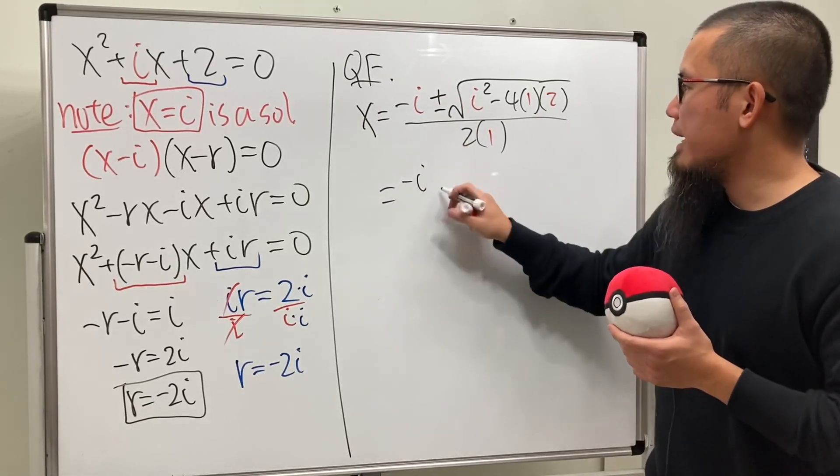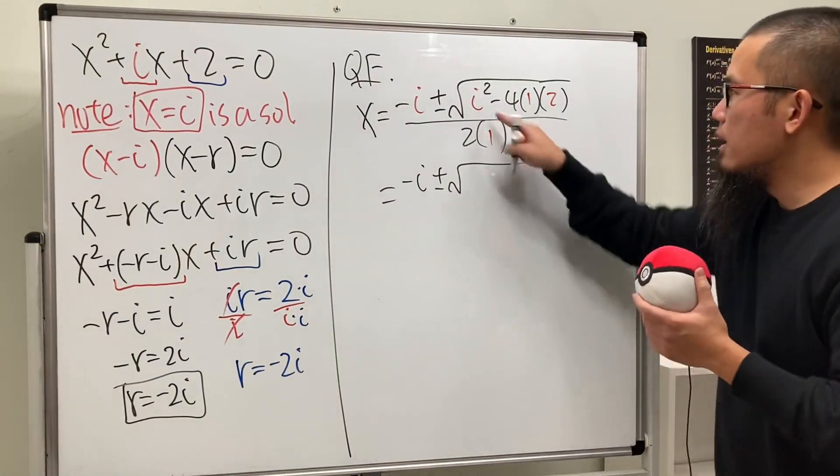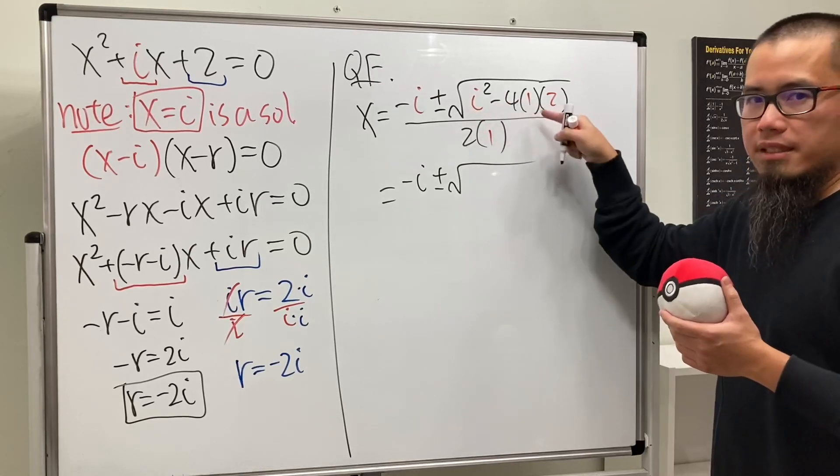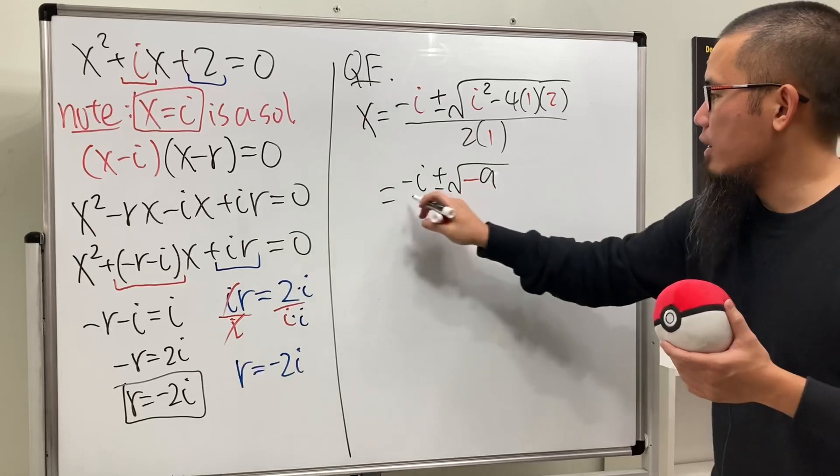This is going to be negative i plus or minus square root. Let's do this in our head. This is negative 1, and then this is 8. Negative 1 minus 8 is negative 9. So all in here we just get negative 9, and then all over 2.